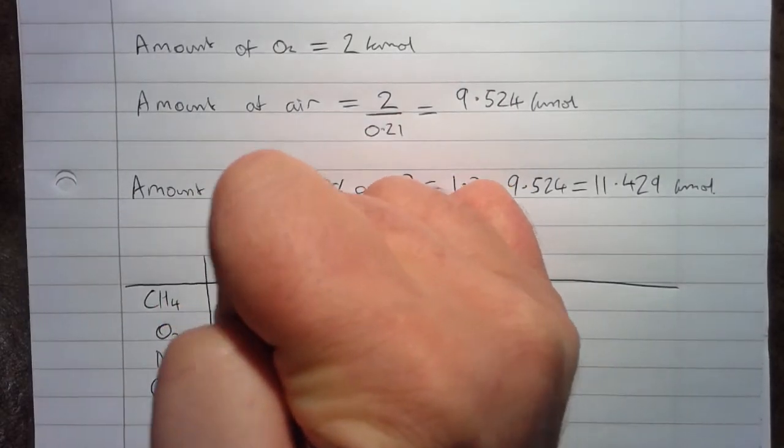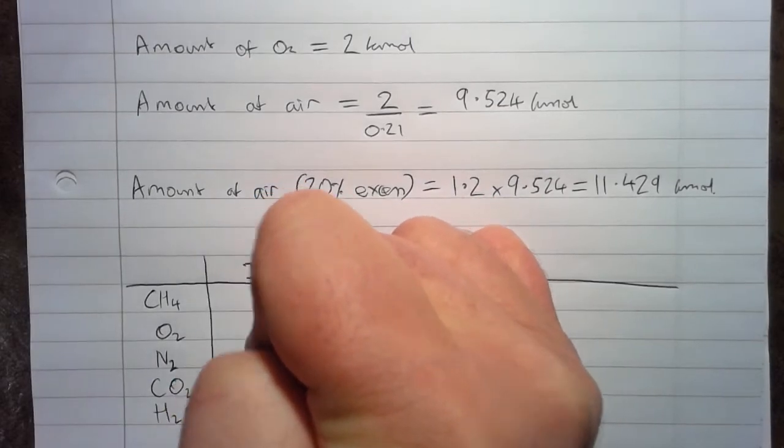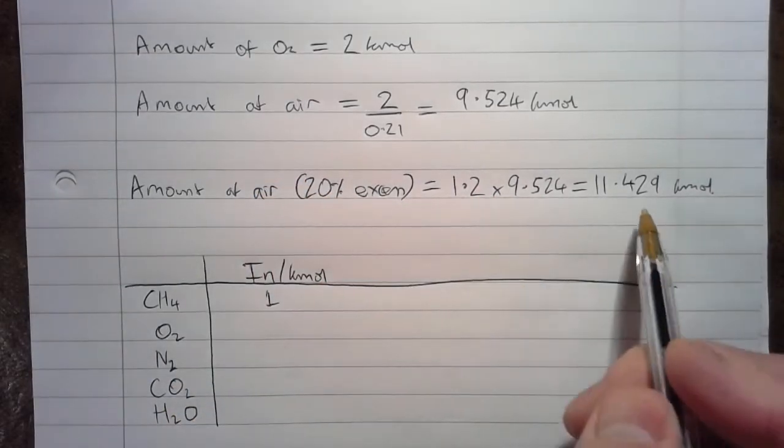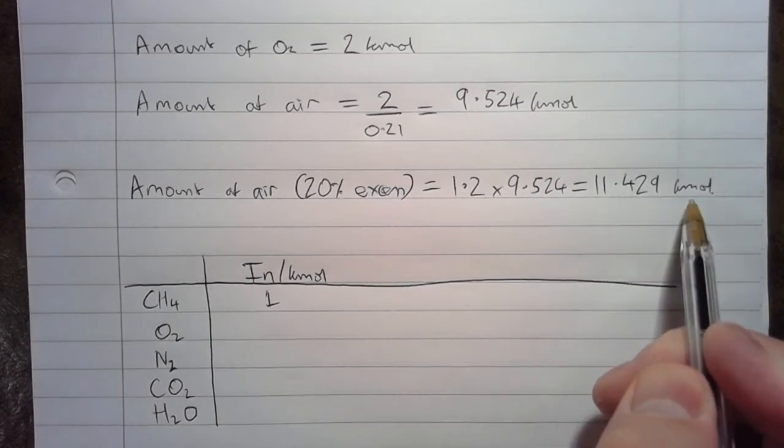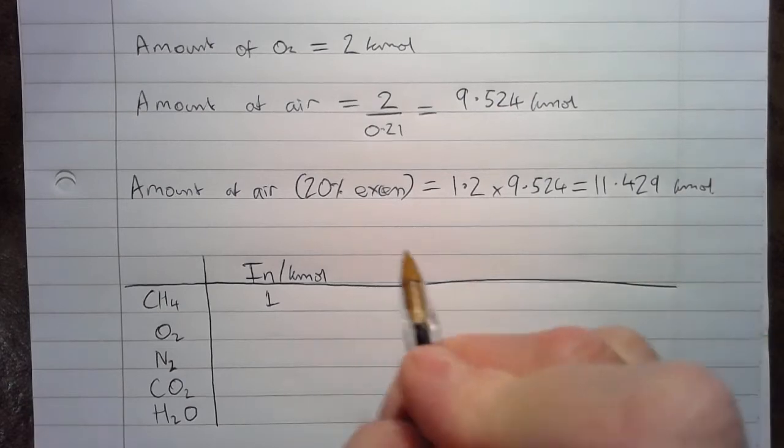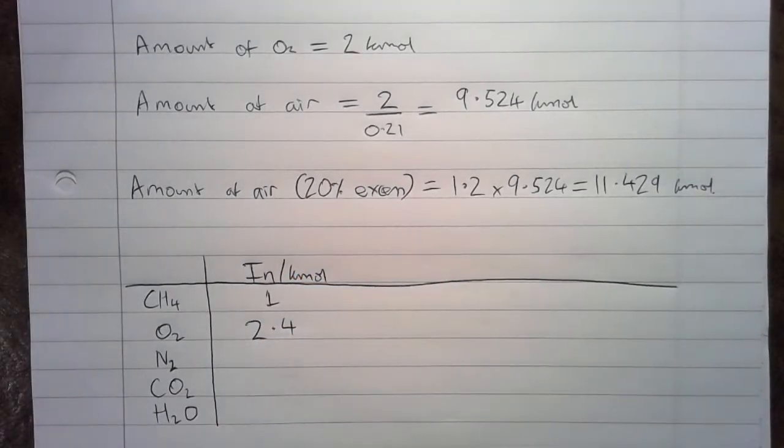In terms of what's coming in, in kmoles, we know we have 1 kmole of CH4. Now, if we multiply the amount of air by 0.21, the mole fraction of oxygen, we will find that we have 2.4 kmoles of oxygen going in.